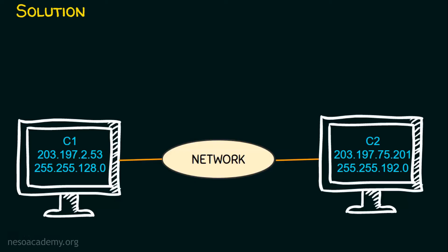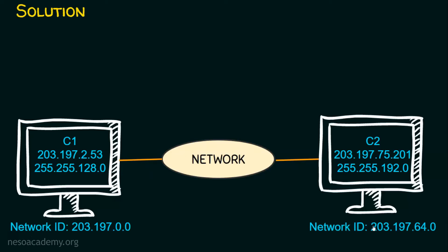Obviously they are not belonging to the same network because the subnet masks are different — here it is 128.0 and here it is 192.0. To find the network address, convert the IP address into binary, convert the net mask into binary, and perform a bitwise AND operation. The network address of C1 is 203.197.0.0, and the network address of C2 is 203.197.64.0.